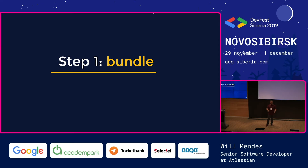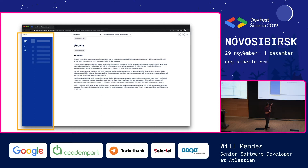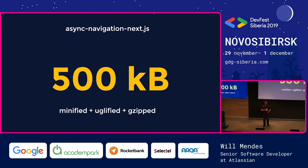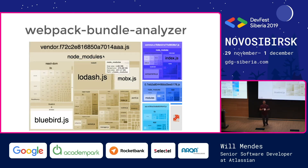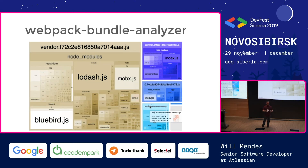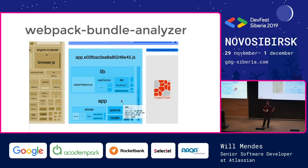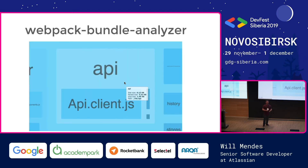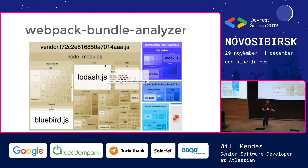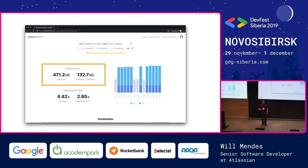Let's talk about the bundle. When you see this page, they have one file called async-navigation-x.js. Only this file was 500 kilobytes gzipped — probably around three megabytes unzipped. It's a massive chunk of code. How can we analyze and decrease this bundle? We can use different toolings. In this case, we used Webpack Bundle Analyzer to understand what was going on, what we could remove from the code, and what we could import differently so we don't need to get all the content from a package — just what we need.